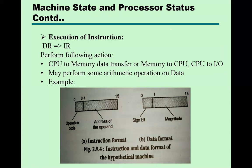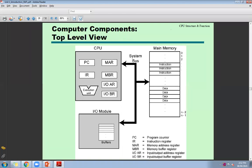The execution unit can perform actions such as: CPU to memory data transfer, memory to CPU data transfer, CPU to input/output data transfer, arithmetic operations, or logical operations. Regarding instructions and data in memory: your main memory is divided into parts for instructions and data, but for the memory itself it is only bits — zeros and ones. Memory is not concerned with whether something is an instruction or data; it only holds zeros and ones.